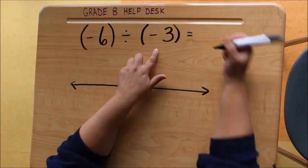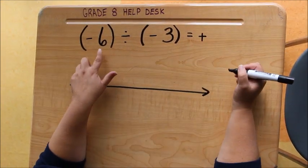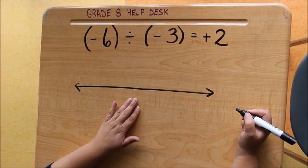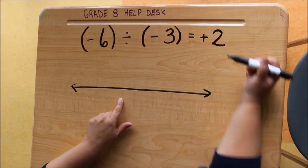So when the signs are the same, our quotient will be positive, and 6 divided by 3 is 2. We're going to use a number line to see if our number line can model what we've done in our math.